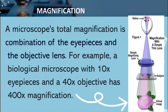In magnification, a microscope's total magnification is a combination of the eyepiece and the objective lens. For example, a biological microscope with 10 times eyepiece and a 40 times objective has 400 times magnification. In this illustration, we can see that the subject used is a small flower, and in order to see it we have to zoom in to see how big this small flower can appear if we use the microscope.